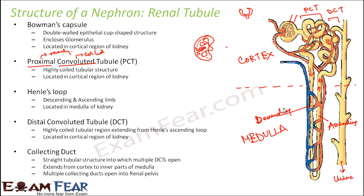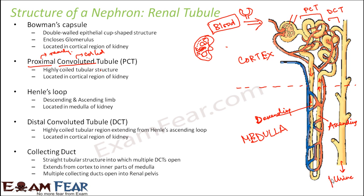So now we understand where exactly urine formation takes place. The question is how urine formation takes place. If you look at the structure of the nephron, what enters is blood — blood enters through the afferent arteriole into the glomerulus. The output from the collecting duct is urine. So we need to understand how wastes are extracted from the blood and urine is formed.